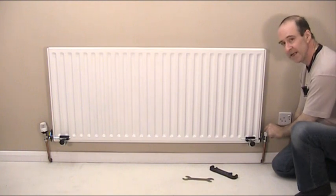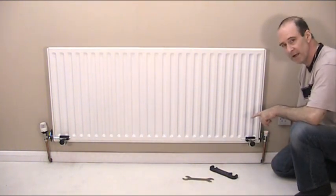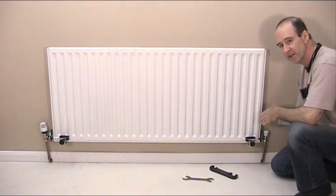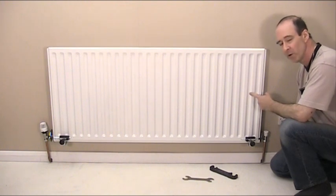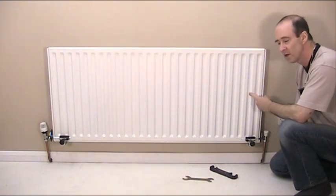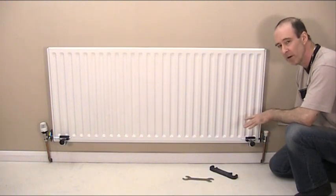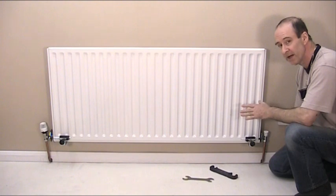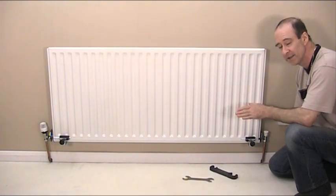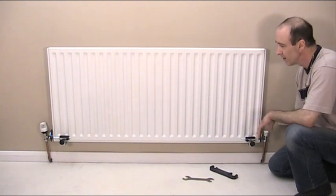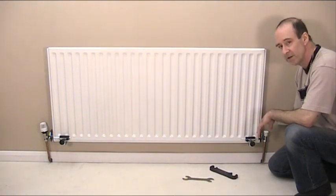Now this one has already been disconnected. I've used the rad clamps to block up the ends of the radiator because when you take the radiator off the wall you will find invariably that there is some black staining water left in the bottom. When you take it off that could come out potentially all over your carpets and floor coverings. Don't forget you have to carry this radiator probably through the house to get it outside.